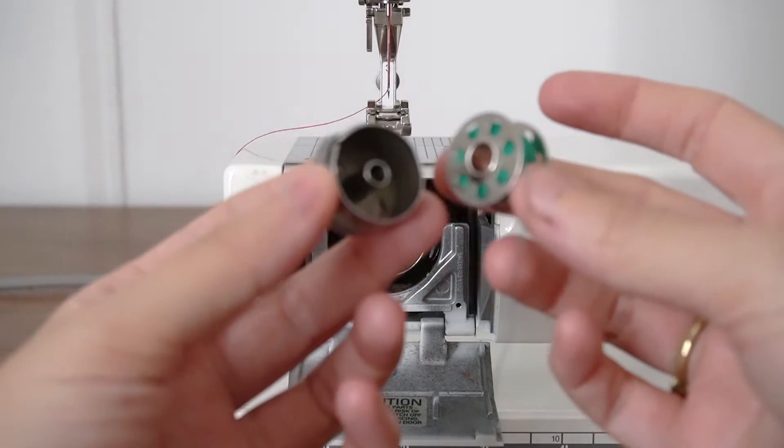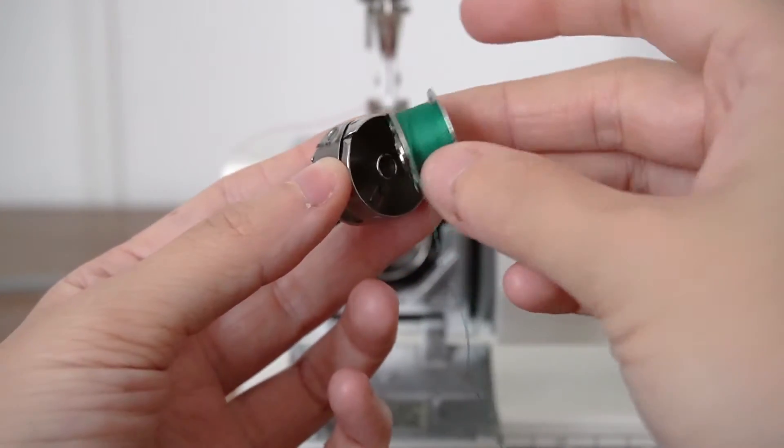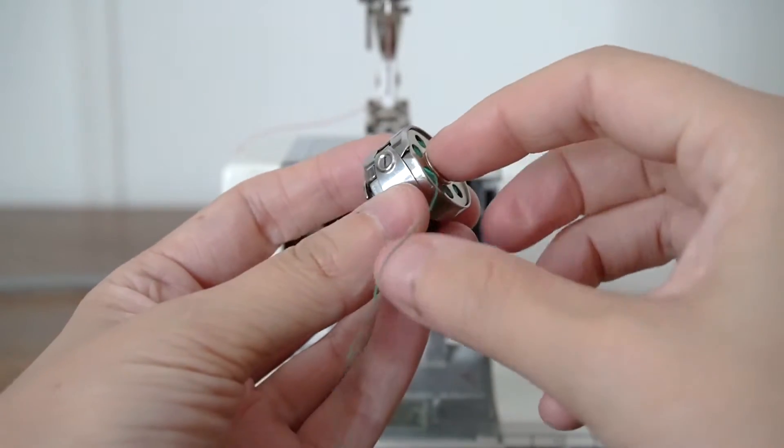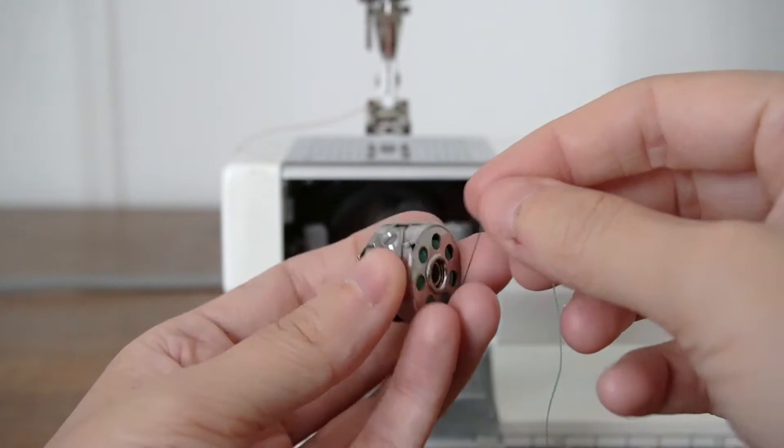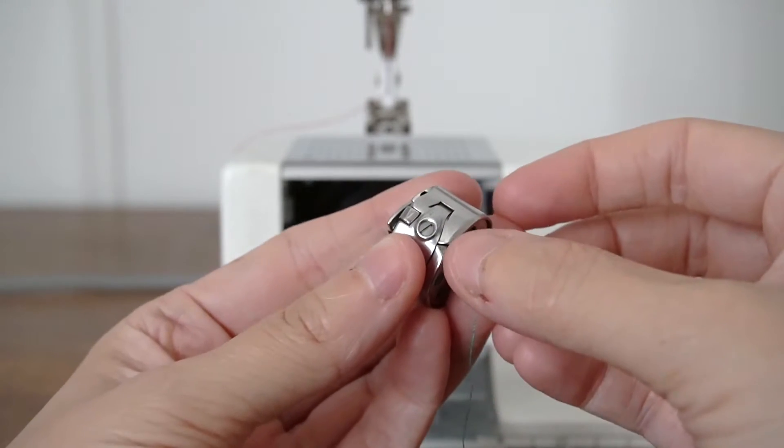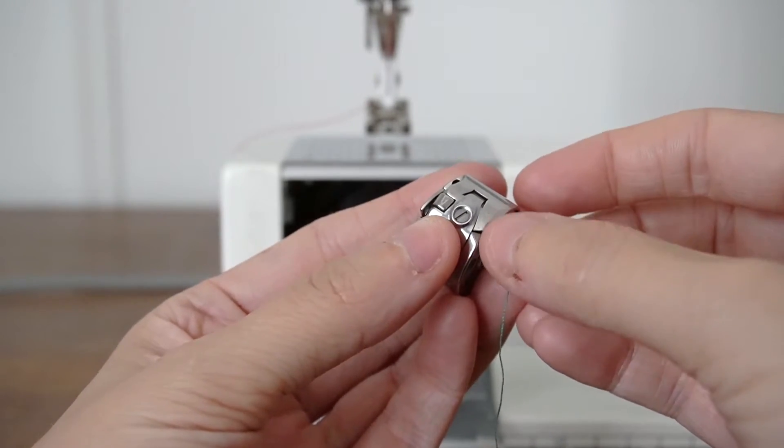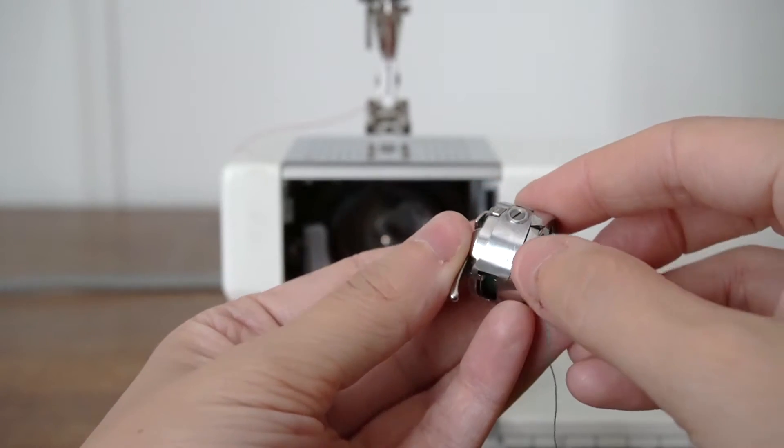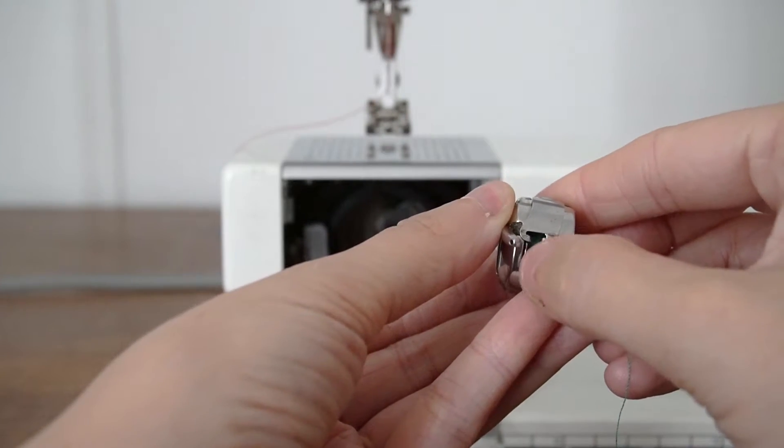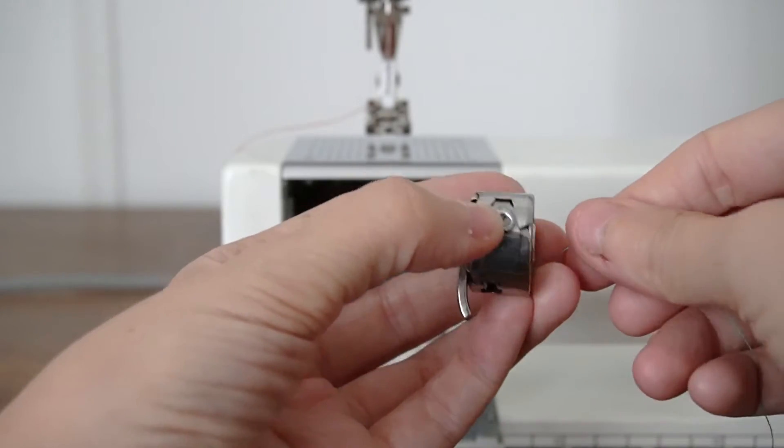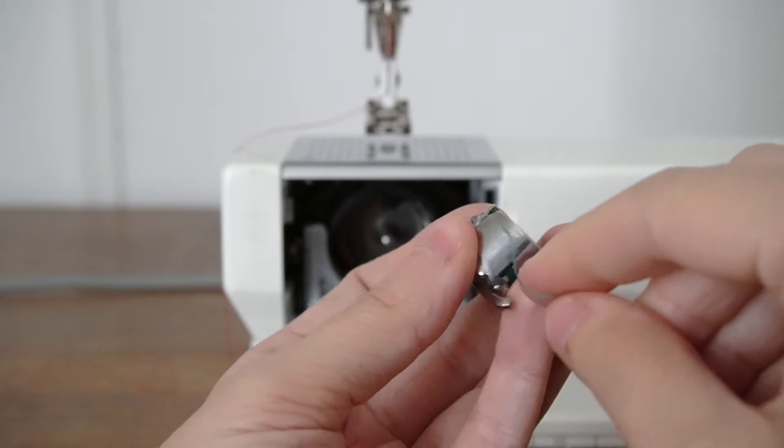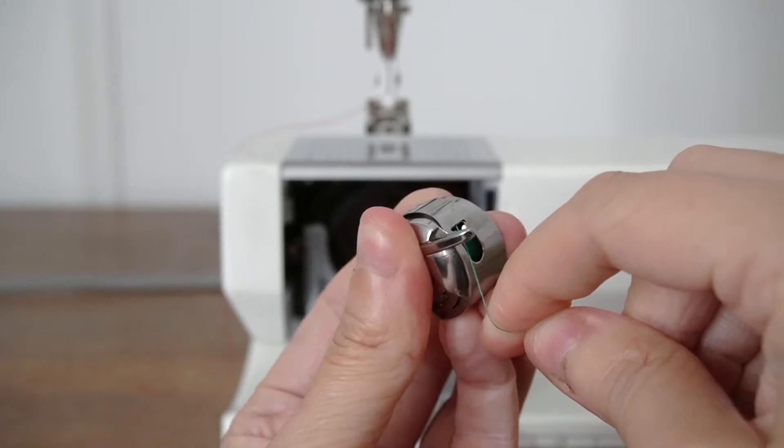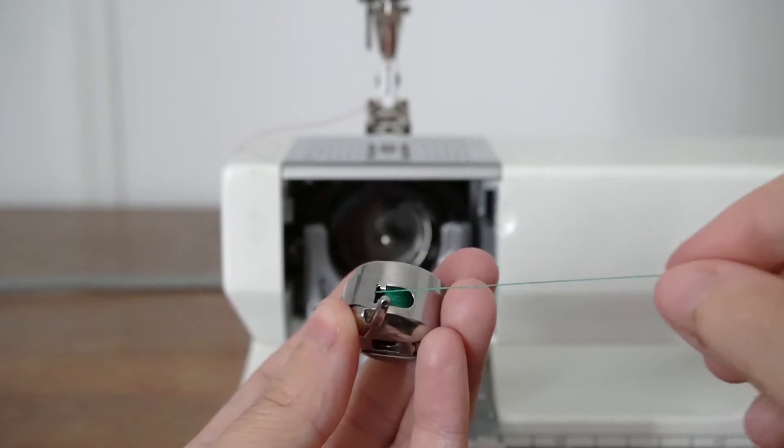You'll place a filled bobbin into the bobbin holder. So you push it in like so. Then you will take a thread coming from the bobbin and there is a little lip right here. You're going to pull the thread through here under this metal piece and then out through the window right here. So I'll show you how to do it. Pull the thread through the lip, under the piece, through the window. It's as simple as that.